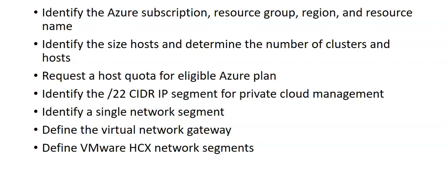When it comes to identifying the subscription, we have to make sure that the subscription we are planning to use for the deployment of Azure VMware Solution — you can either create a new one or request a new one. The subscription must be associated with the Microsoft Enterprise Agreement (EA) or a Cloud Solution Provider Azure Plan (CSP). When identifying the resource group, a resource group is generally created specifically for the Azure VMware Solution, but you can use an existing one as well. It is always good to create a separate resource group.